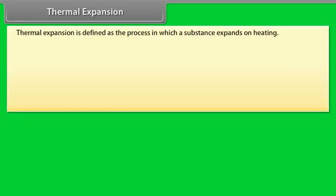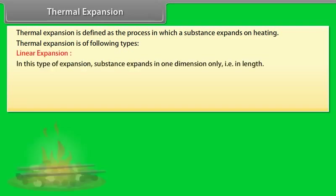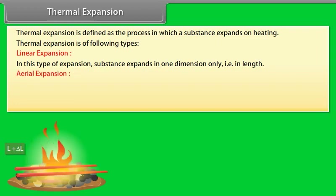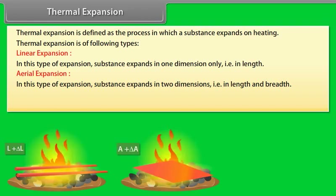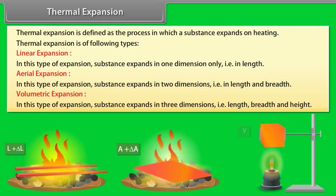Thermal expansion is defined as the process in which a substance expands on heating. It is of three types: (1) Linear expansion — the substance expands in one dimension only, i.e., in length; (2) Aerial expansion — the substance expands in two dimensions, i.e., in length and breadth; (3) Volumetric expansion — the substance expands in three dimensions, i.e., in length, breadth, and height.